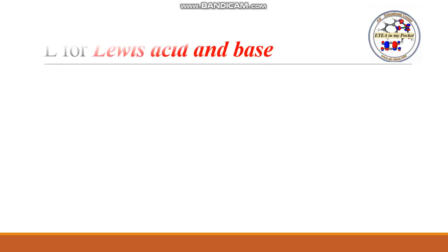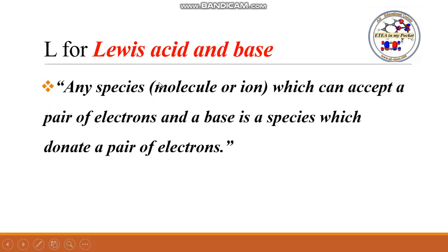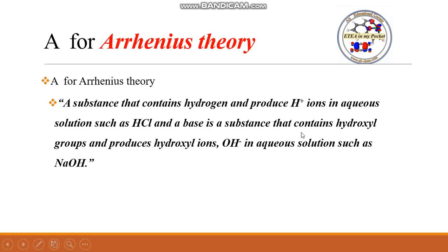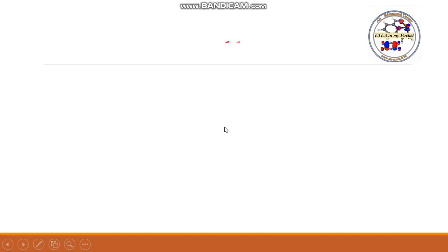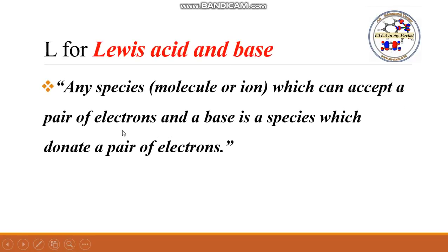Now L is for Lewis acid and base. Any species — molecule or ion — which can accept a pair of electrons is a Lewis acid, and a base is a species which can donate a pair of electrons. In the first theory we talked about hydrogen and hydroxyl ions; in the second, about proton donation and acceptance; in the third, if there is no hydrogen at all, we talk about electron pairs.